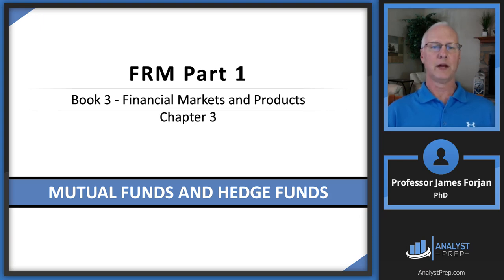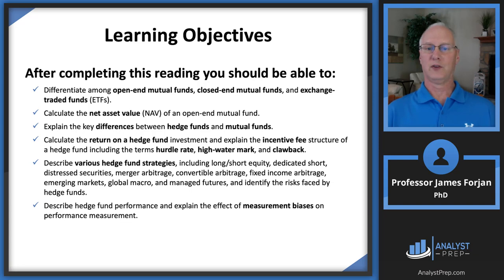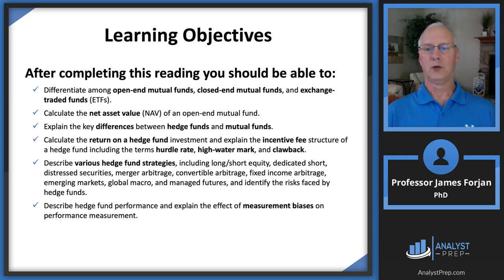This is FRM Part 1, Book 3, Financial Markets and Products, Chapter 3, Mutual Funds and Hedge Funds. Here are the learning objectives for this chapter. We're going to differentiate between open-ended and closed-ended mutual funds, including ETFs. We'll look at the differences between hedge funds and mutual funds, calculate net asset value for an open-ended fund, and calculate the return on a hedge fund including fee structure considerations. We'll describe various hedge fund strategies and end with a discussion on survivorship bias.